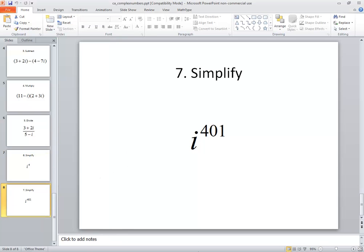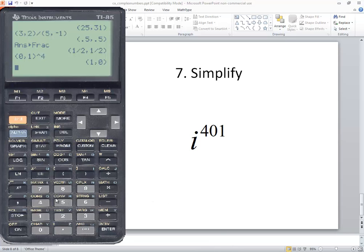Okay, i to the four hundred and first power. Well I'll do beginning parentheses, zero, comma, one, and then four hundred and first power, so do caret four hundred and one, and press enter.